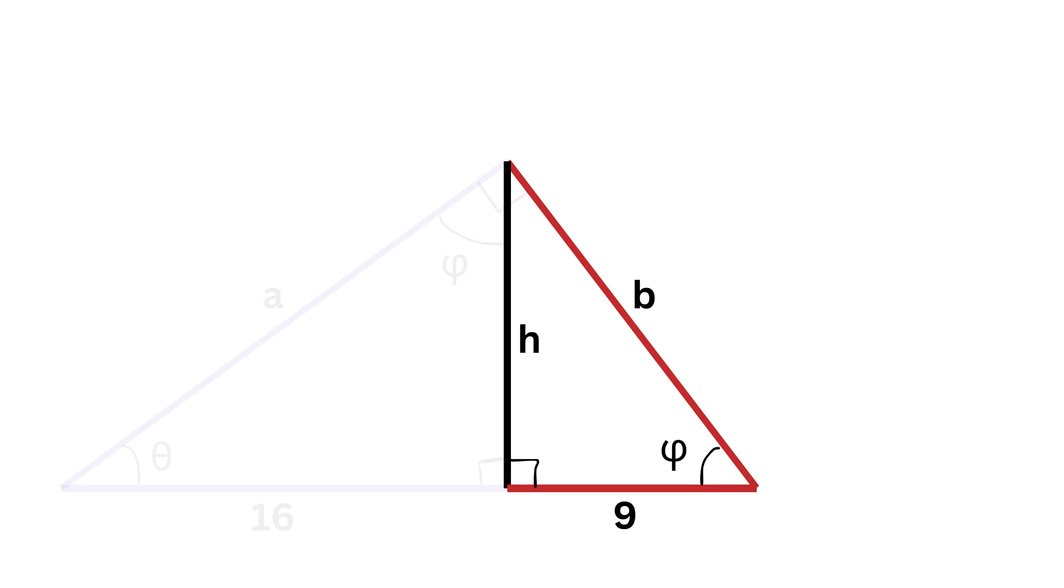The same logic works for the right small triangle. It has a right angle, shares angle phi with the big triangle, so its third angle must be theta. That means each of the three triangles has the exact same set of angles, just shuffled, and that makes them similar by angle-angle-angle.